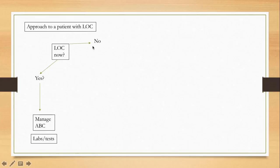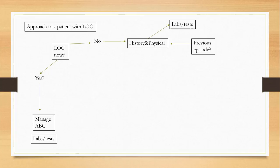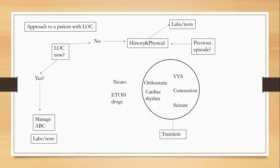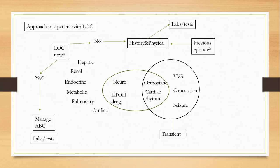The other scenario is that the patient is conscious at the time, and you will do the regular history and physical exam, getting as much information as possible about a previous episode, then run labs and tests accordingly. This would be a transient loss of consciousness. Causes include vasovagal, concussion, seizures, orthostatic hypotension, and cardiac rhythm problems — some of which, if sustained or uncorrected, can lead to prolonged loss of consciousness, along with systemic causes.